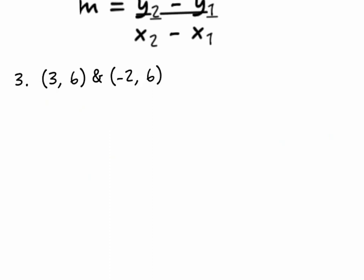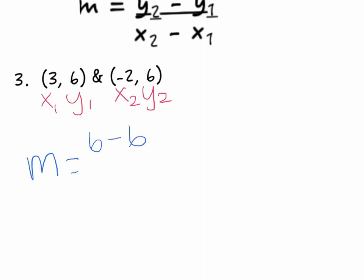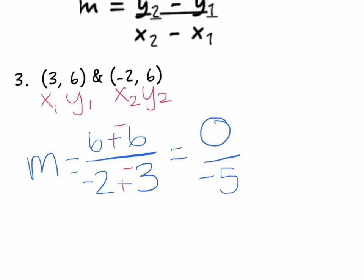Ladies and gentlemen, we're back. I have my formula written at the top and I'll label my ordered pairs. Going a little more quickly: substituting gives me y sub 2 minus y sub 1 over x sub 2 minus x sub 1, which is 6 minus 6 over negative 2 minus 3. Changing subtraction to add the opposite gives me 0 divided by negative 5. Anytime you have 0 in your fraction, simplify it: 0 divided by 5 equals 0. The next slide will show a graph of what a slope of 0 looks like.